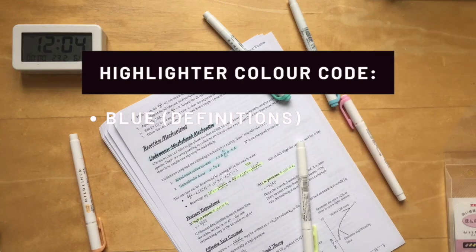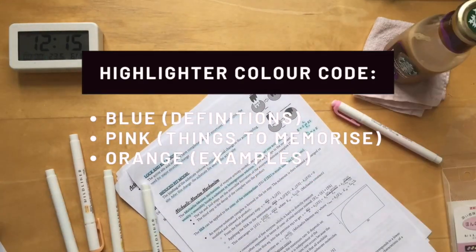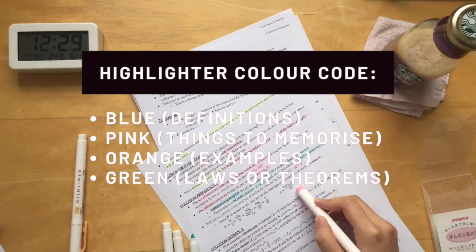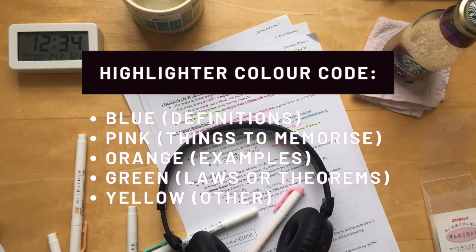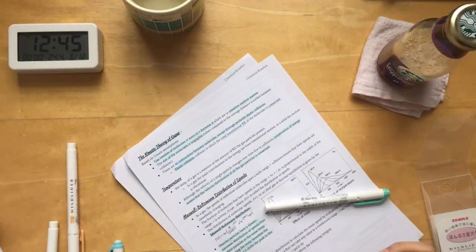Blue for definitions, pink for things to memorize, orange for examples, green for laws or theorems, for example the laws of thermodynamics in chemistry, and yellow for other things which may be useful, for example exceptions to a law.